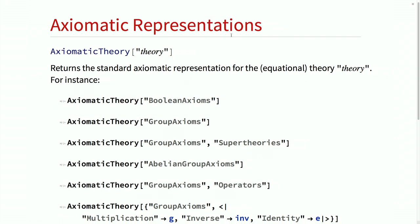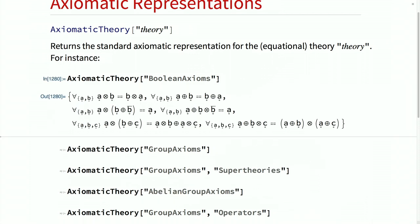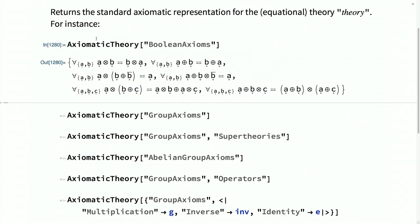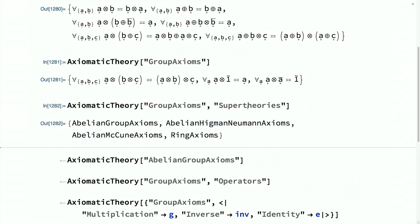Let me talk about something new in version 12: in addition to updates to FindEquationalProof, we also released a function called AxiomaticTheory, which gives a more user-friendly interface. You specify a standard axiom system for mathematics and get back a list of computable forms of those axioms that can be fed directly into our theorem-proving framework. For example, AxiomaticTheory can return axioms for Boolean algebra, typeset using circle-times operators, or the axioms for group theory. We also store metadata for each theory, such as the list of super theories.